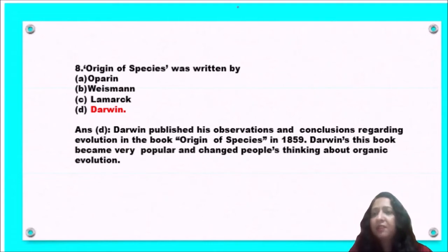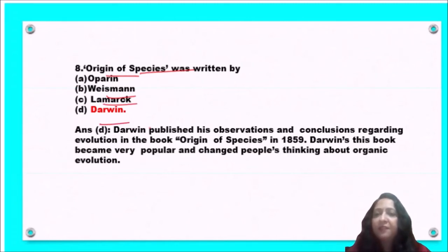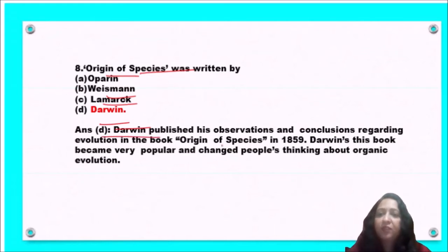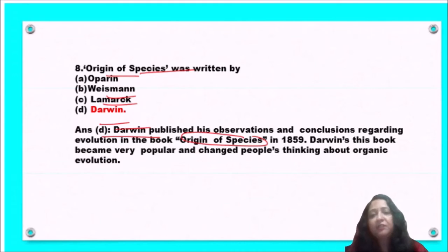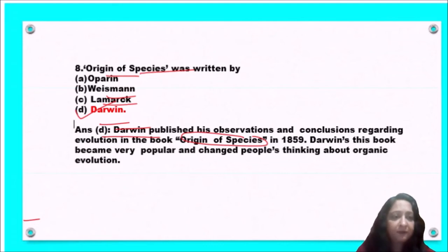Next question: 'Origin of Species' was written by Oparin, Weismann, Lamarck, or Darwin? Darwin published his observations in the book 'Origin of Species' in 1859. This book was very popular and changed people's thinking about organic evolution. So option D, Darwin, is the correct answer.